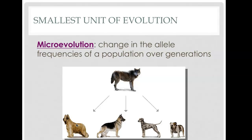On page 241, we're going to talk about microevolution. Microevolution, as opposed to macro — micro means at a really small level. It is a change in allele frequencies of a population over generations, and the key word here is population. We're not talking about an entire species, but just a group of the same species that live in the same area and breed with each other.